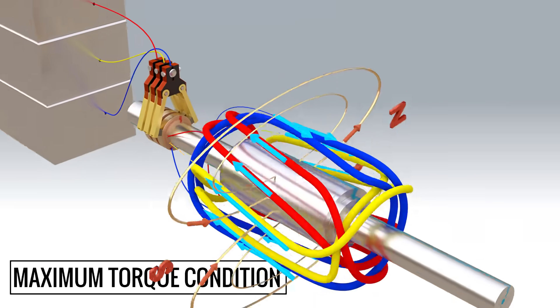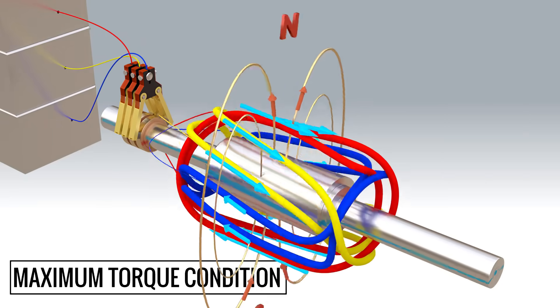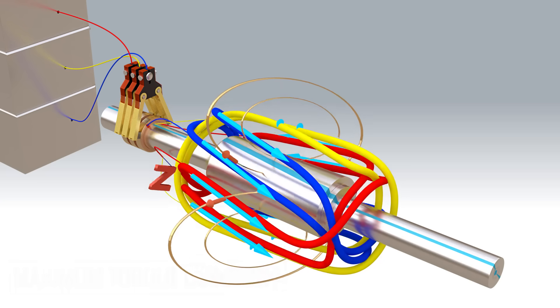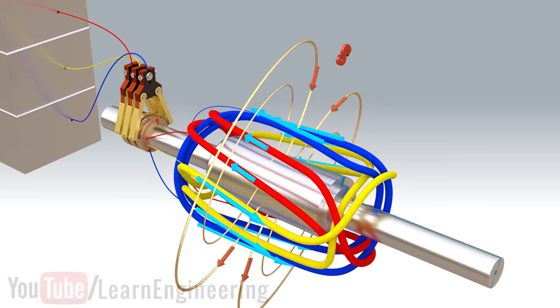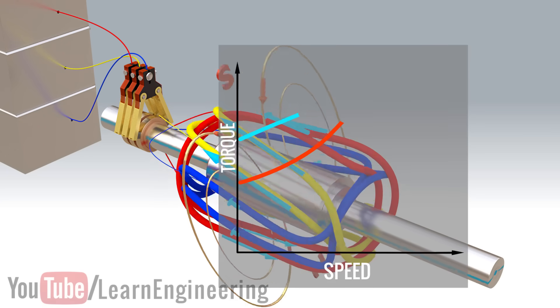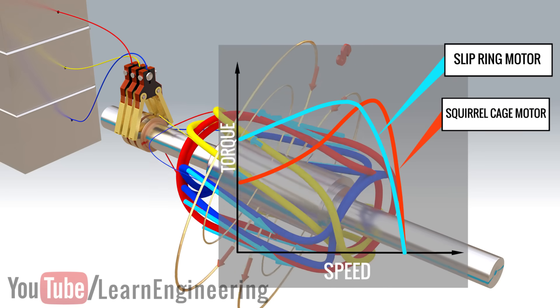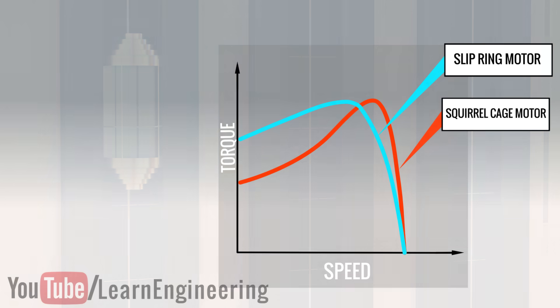This way, slip ring induction motors will be able to produce high torque even as they are starting. These graphs clearly show the higher starting torque produced by slip ring motors in comparison to squirrel cage motors.